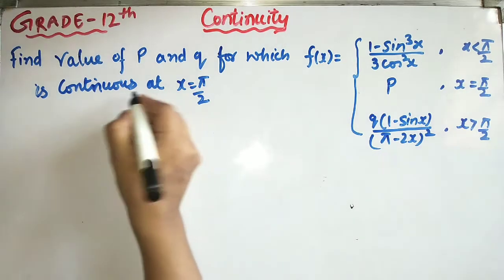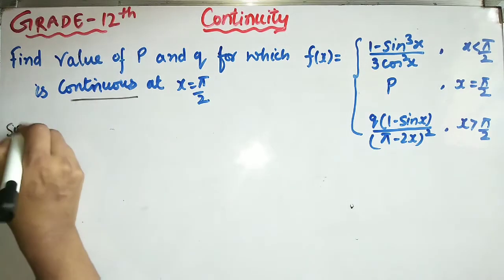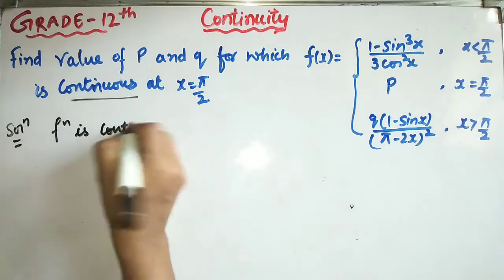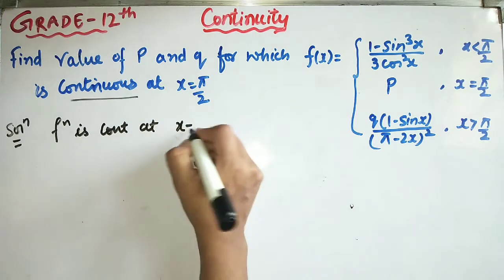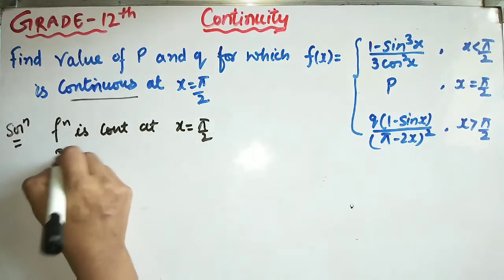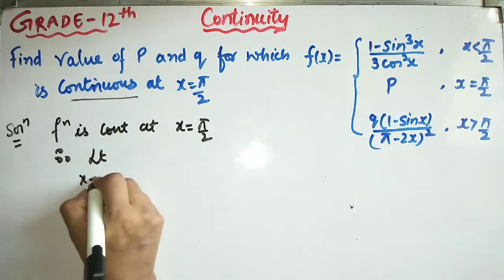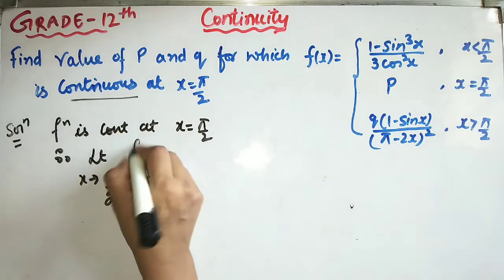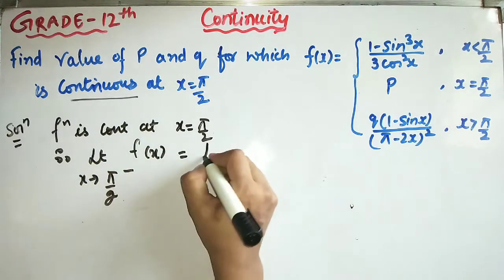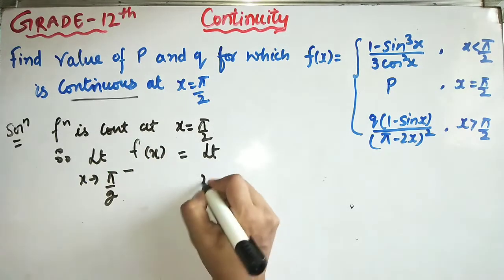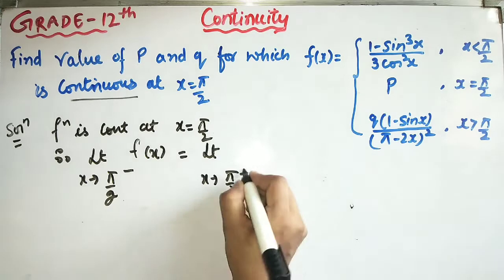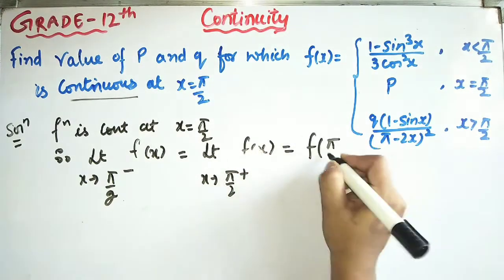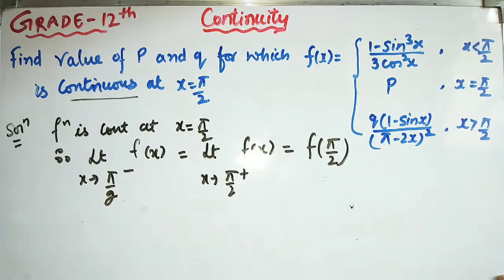The function is already continuous, so we will write: function is continuous at x = π/2. Therefore, the left-hand limit — limit as x → π/2⁻ of f(x) — equals the right-hand limit — limit as x → π/2⁺ of f(x) — equals f(π/2).